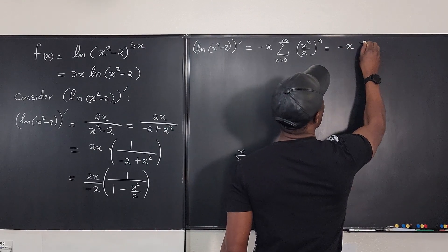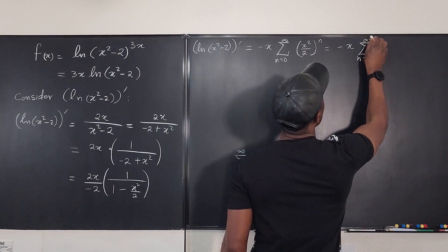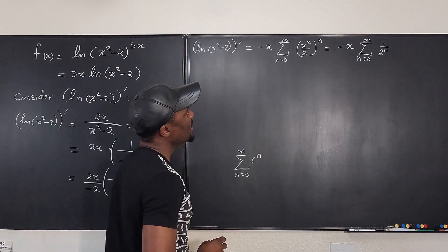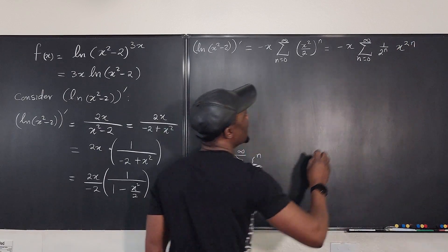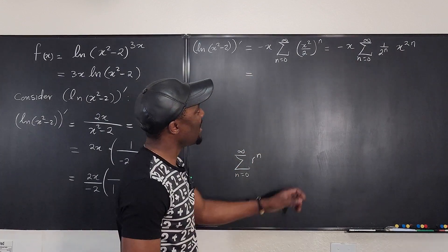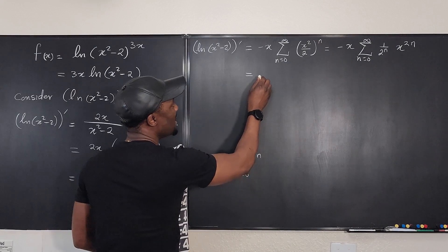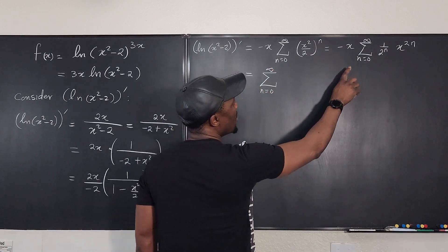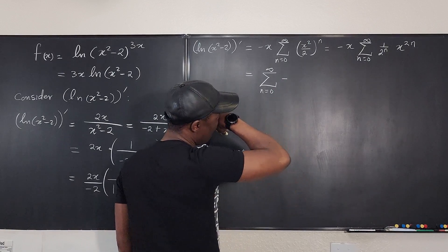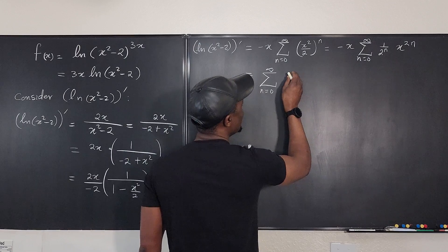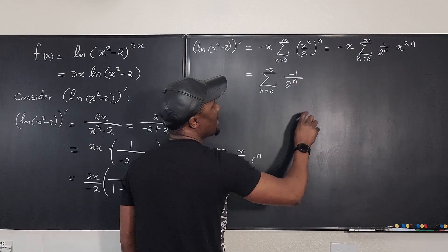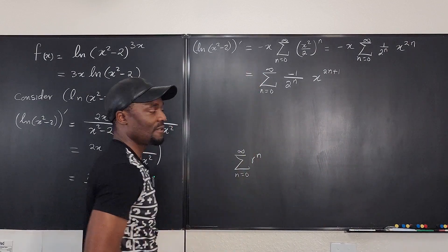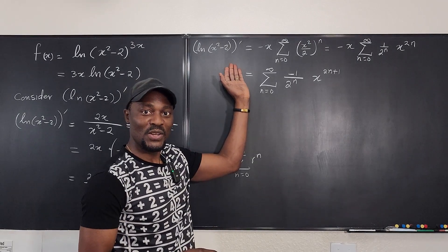We can simplify this as -x times the sum from n=0 to infinity of (1/2)^n · x^(2n). Bringing the -x inside, this becomes the sum from n=0 to infinity of (-1/2^n) · x^(2n+1). That's the power series for the derivative.